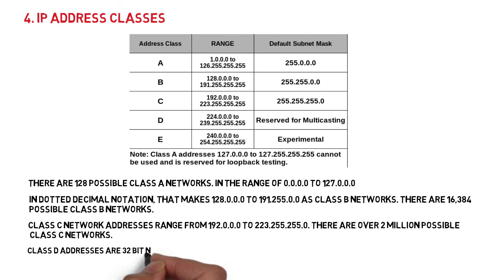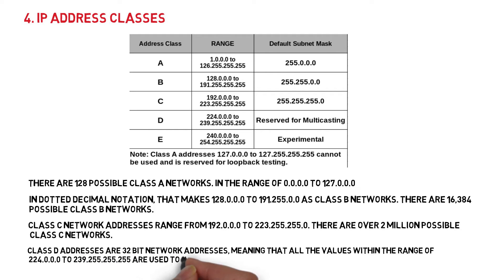Class D addresses are 32-bit network addresses, meaning that all values within the range of 224.0.0.0 to 239.255.255.255 are used to uniquely identify multicast groups.